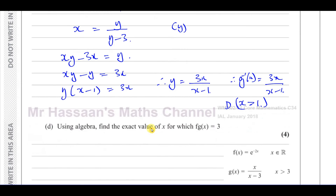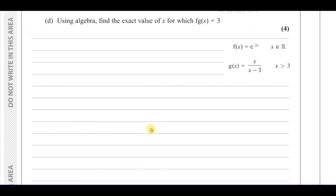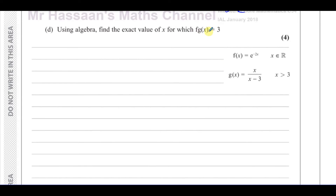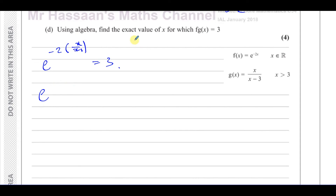For part D, it says using algebra find the exact value of x for which fg(x) equals 3. We've got to find the composite function fg(x) and equate it to 3. We replace the x in f with g(x): e to the power of negative 2 times (x over x minus 3) equals 3. That gives us e to the power of minus 2x over (x minus 3) equals 3. Be careful — this is minus 2 times x over (x minus 3), so it's minus 2x over (x minus 3), not multiplying both numerator and denominator by minus 2.